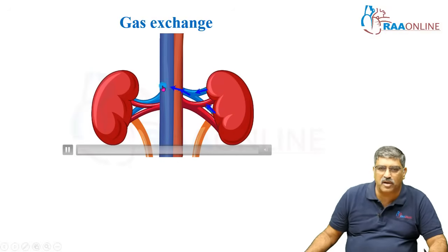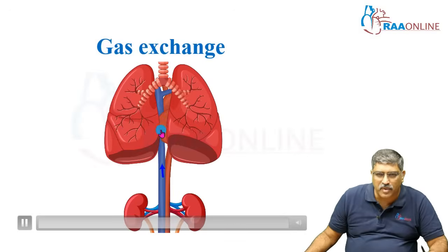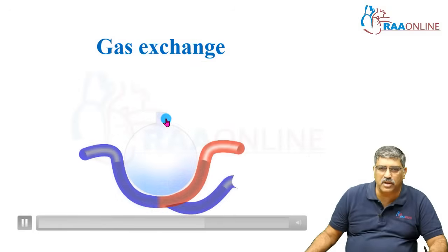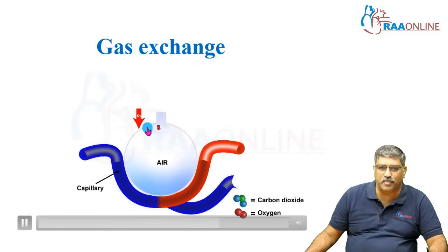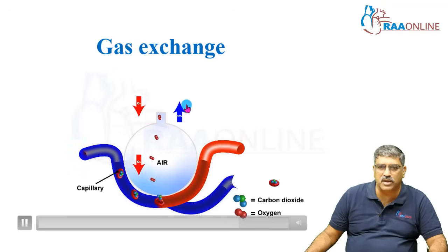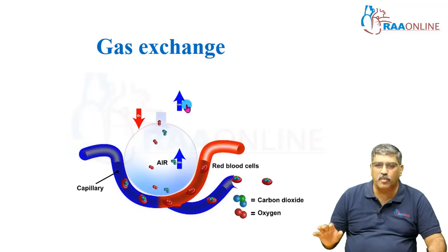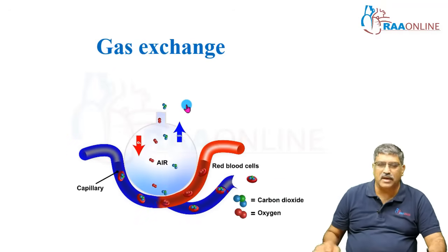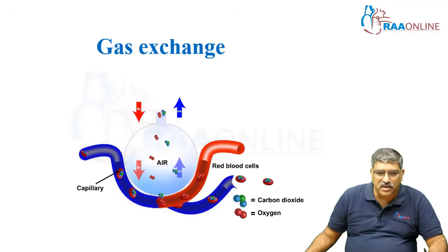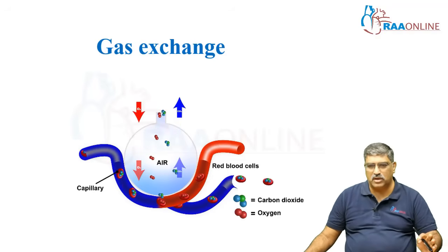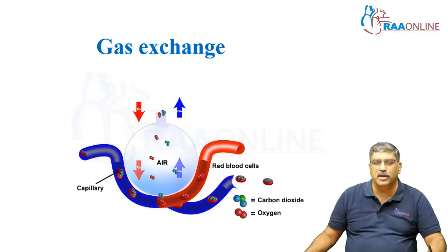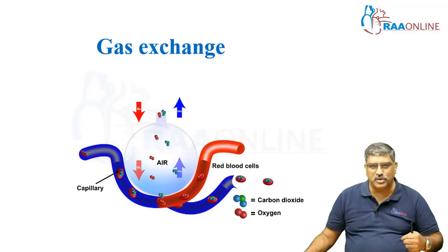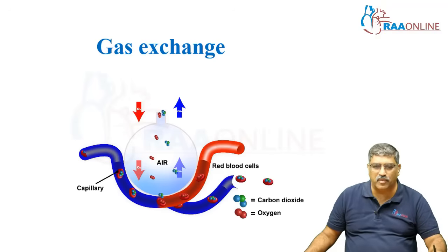After utilization, carbon dioxide comes in and this carbon dioxide is again carried by hemoglobin to the circulation where gas exchange happens. So oxygen comes in and the carbon dioxide goes out into the atmosphere. This is the normal process of gas exchange. The basic functional unit of extracellular respiration is to move oxygen from the alveoli into the blood and into the tissue.